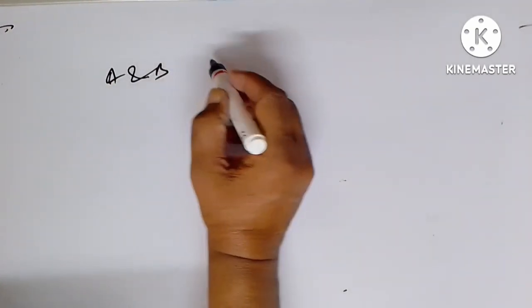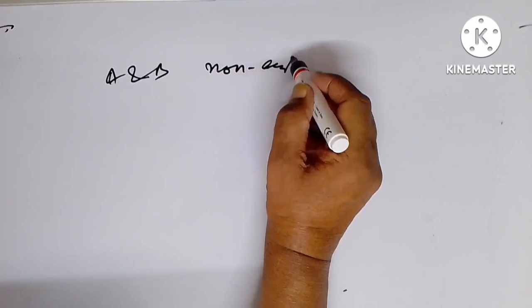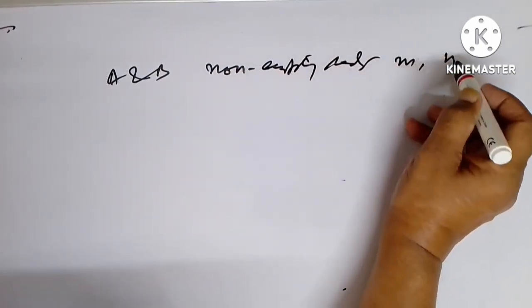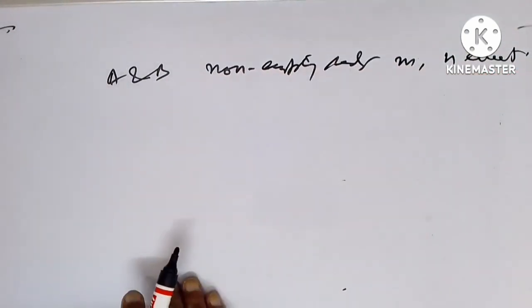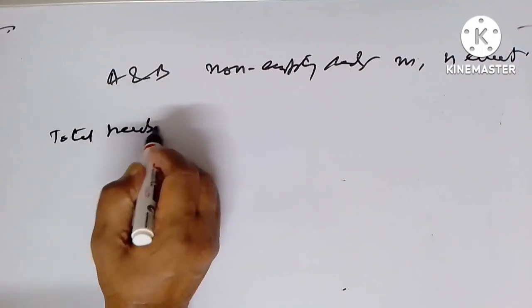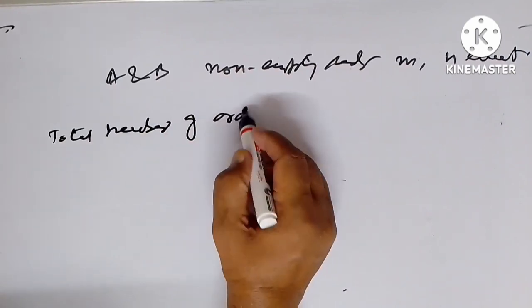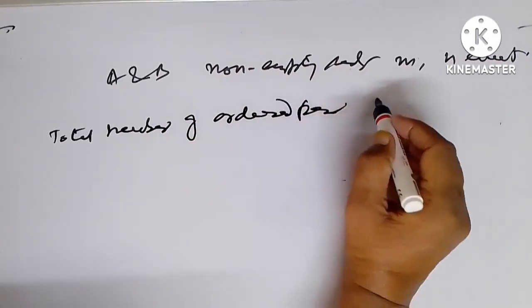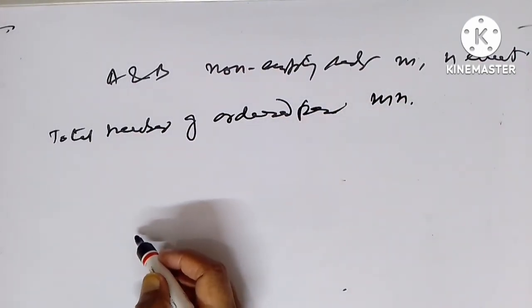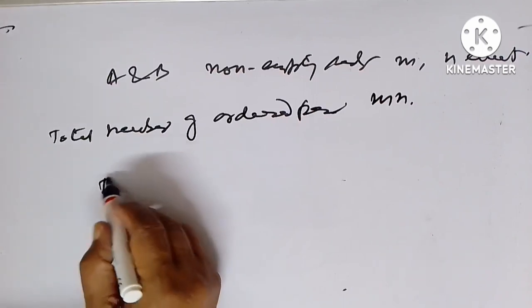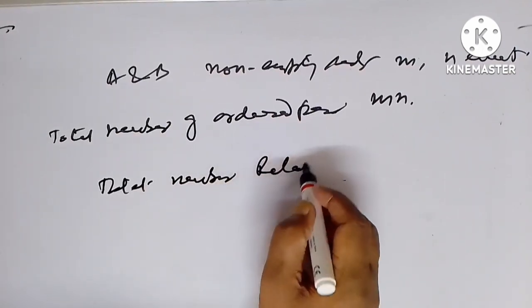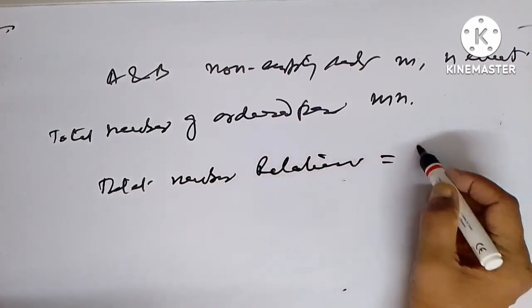If A and B are non-empty sets containing M and N elements respectively, then the total number of ordered pairs will be M times N. And the total number of relations is equal to 2 to the power M times N.